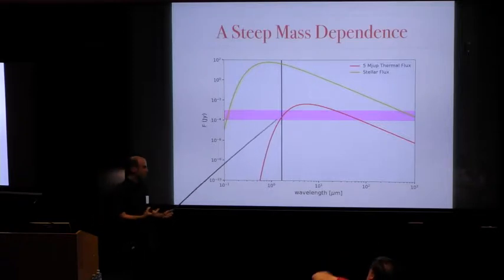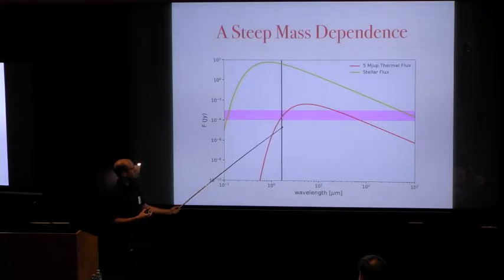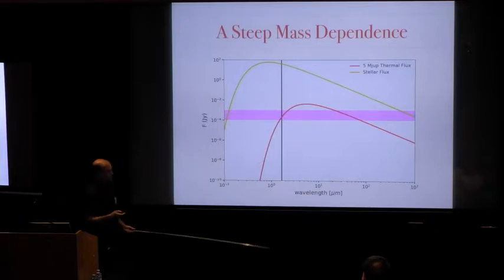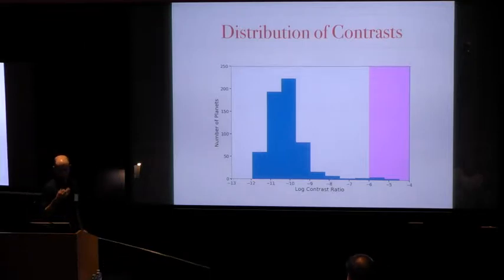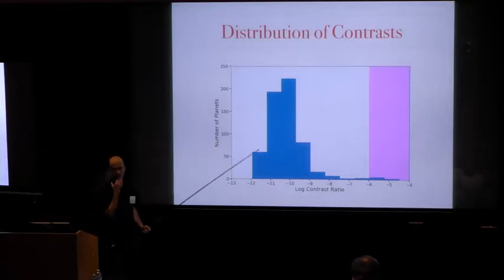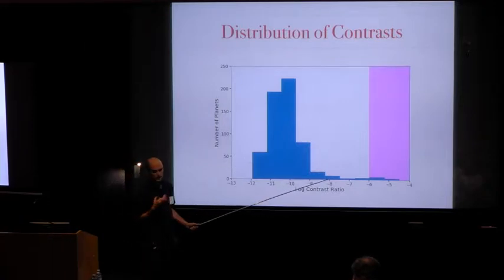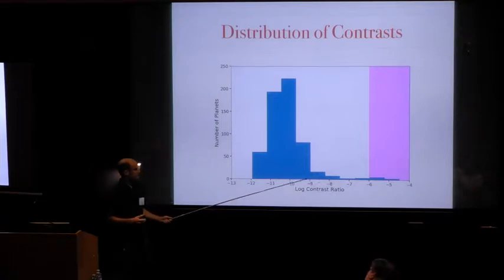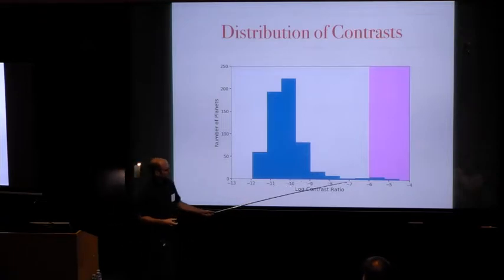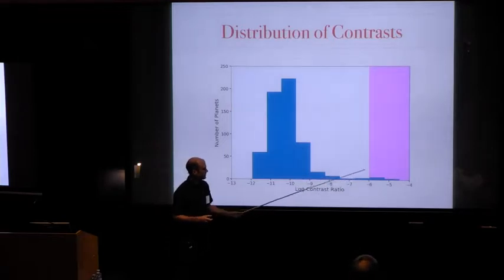If you imagine dropping the mass of this planet so that the temperature goes down, then your blackbody is going to go down, but more importantly, it's going to shift to the right, and that makes your flux drop off a cliff. So the first big takeaway, the point that I want to make, is that even if the occurrence rate of planets rises smoothly from super Jupiters all the way to Neptunes, the distribution of contrast ratios does not.